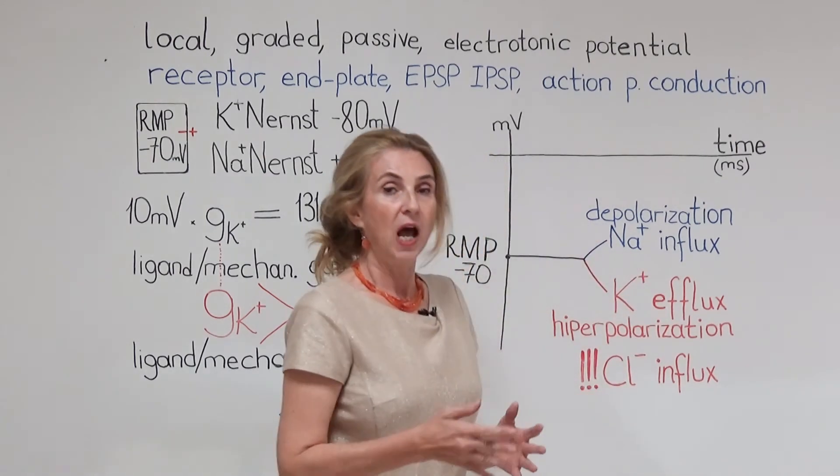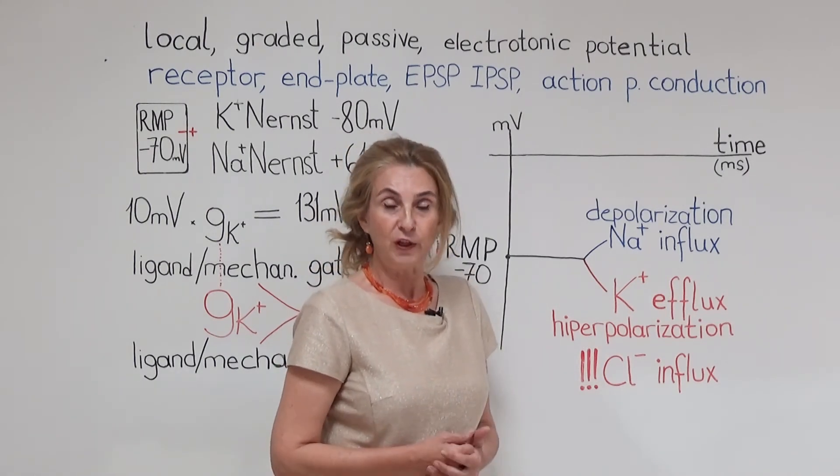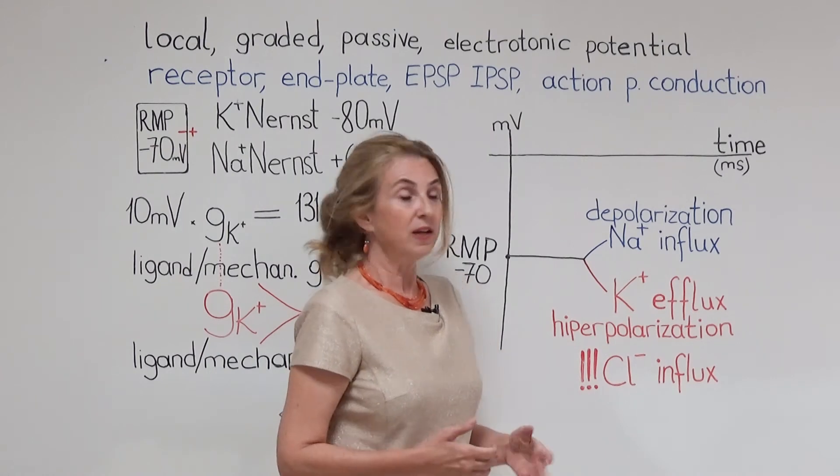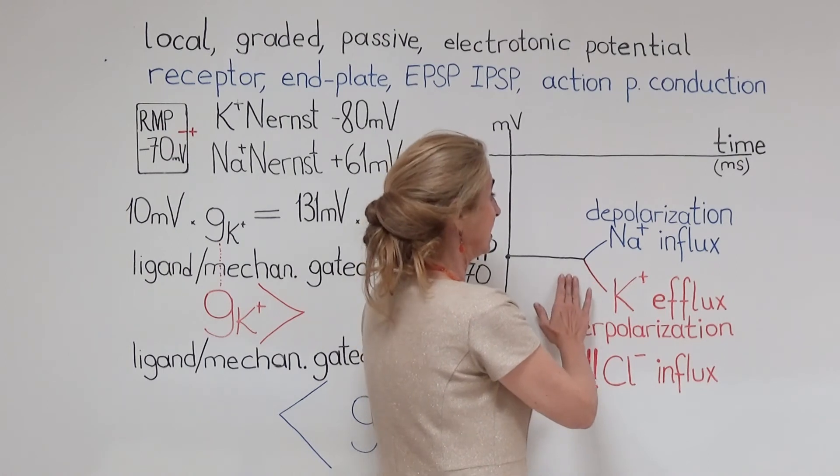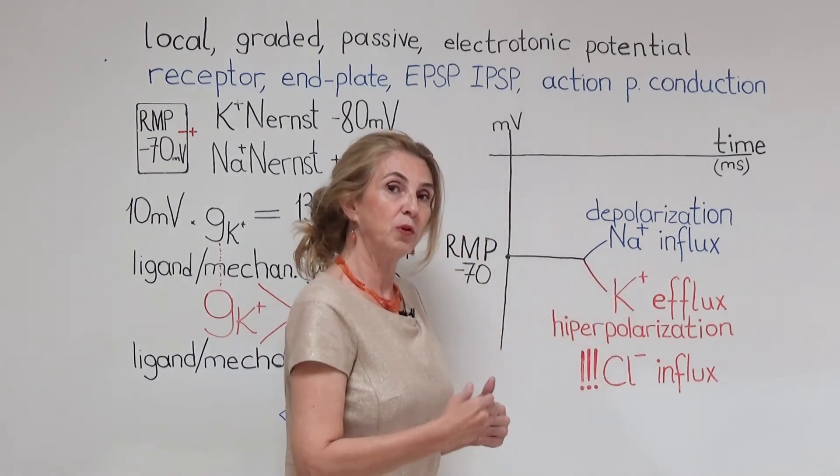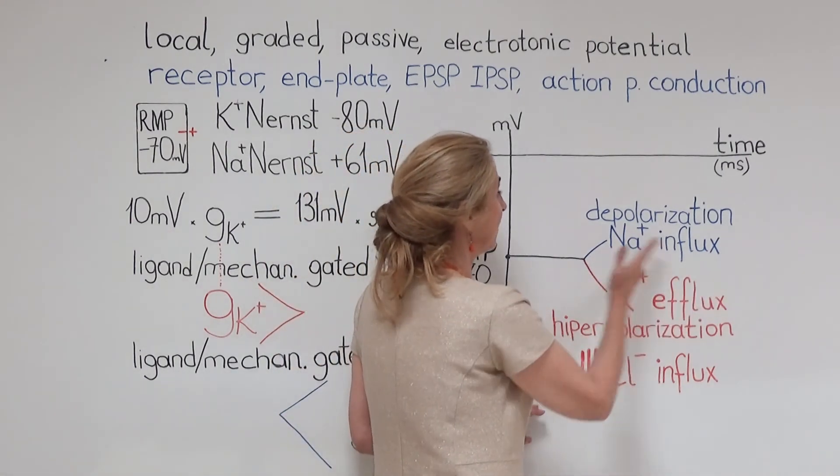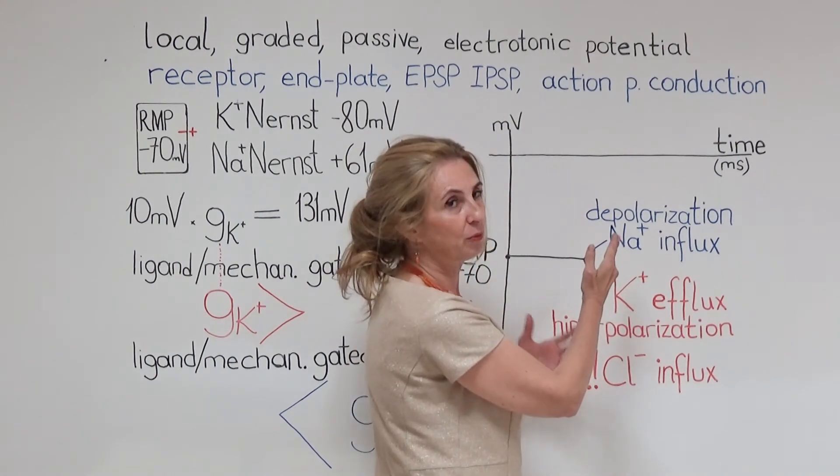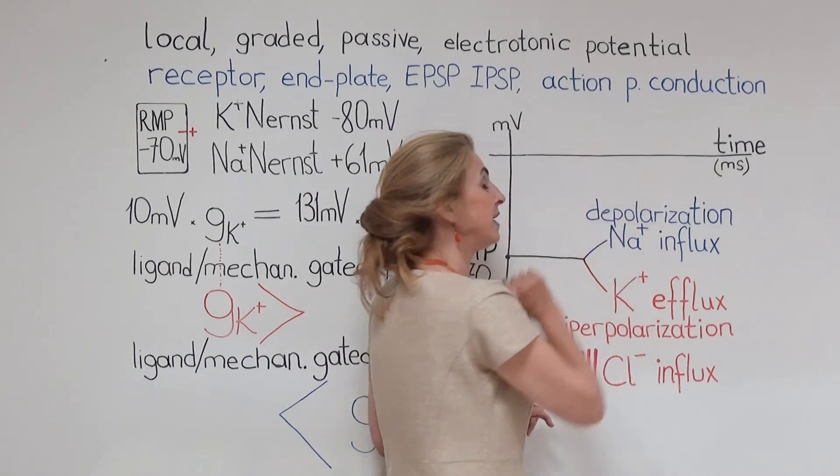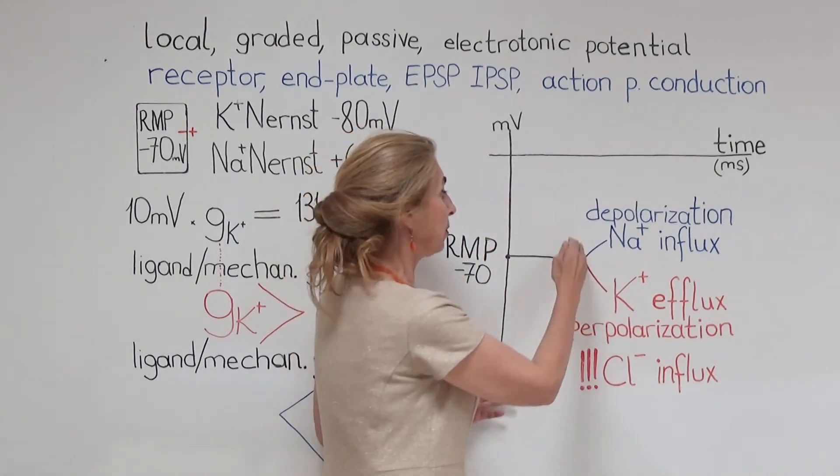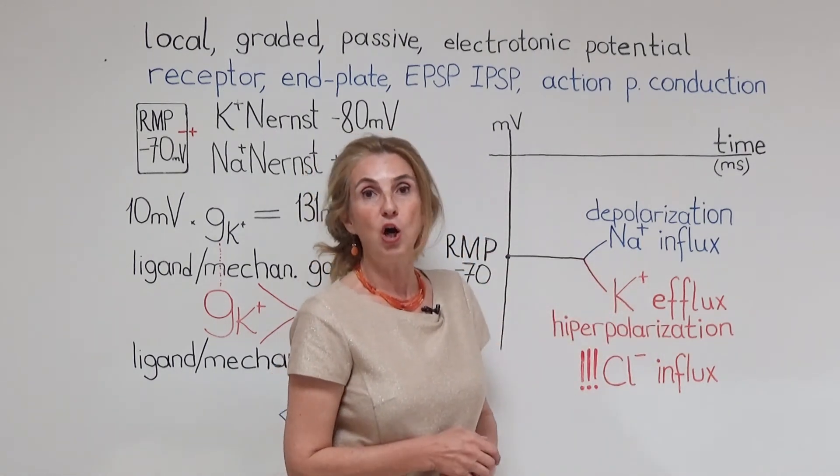Potassium efflux is producing hyperpolarization. You are going to remember from another video about the ion channels that every ion coming together with its ion channels tries to bring the membrane potential towards its own Nernst potential. So, here we can see that sodium influx is trying to bring the membrane potential towards the Nernst potential of sodium. And potassium efflux is trying to bring the membrane potential towards the Nernst potential of potassium.